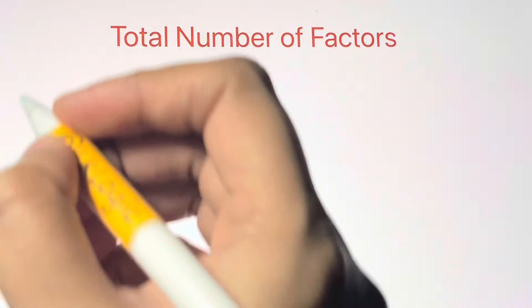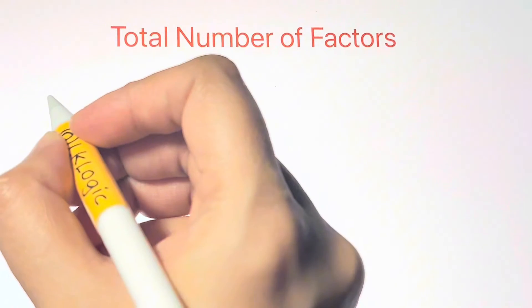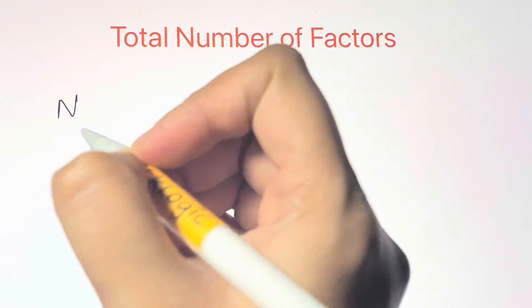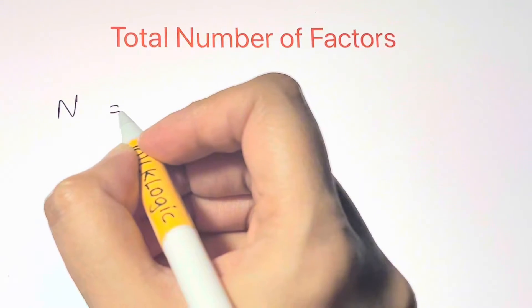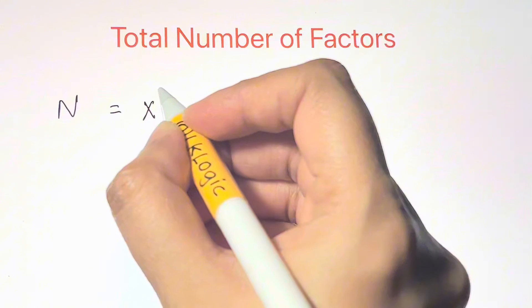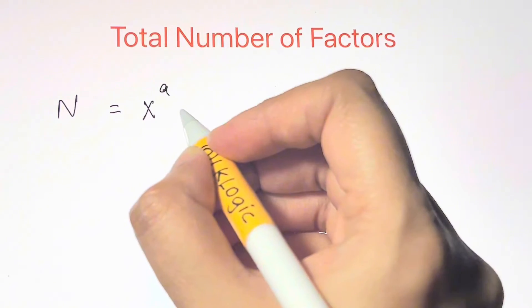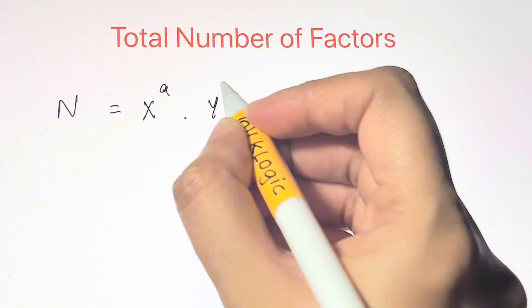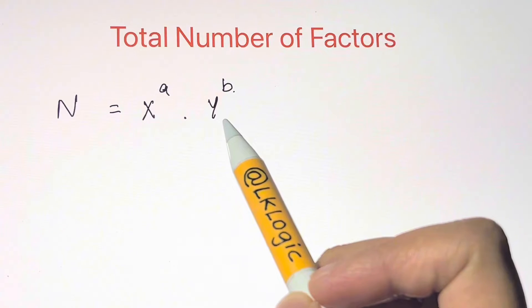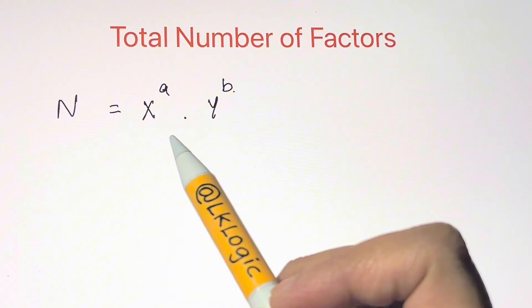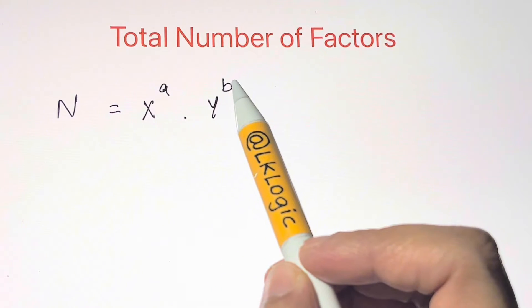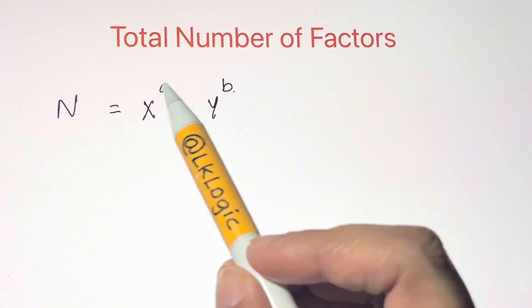Suppose for a number N, whose prime factorization is given by x to the power of a times y to the power of b. We get the total number of factors by adding one to each exponent and then multiplying these together.